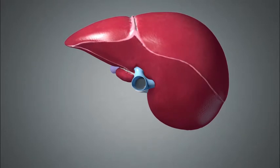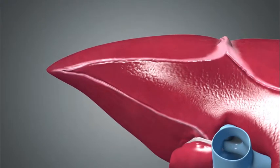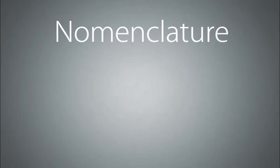This is a cephalad view of the liver, depicting the IVC as it emerges from the liver and traverses the diaphragm toward the heart. Holding the liver to the diaphragm are the coronary ligaments, which are actually peritoneal reflections, including the left coronary ligament and the right coronary ligament.